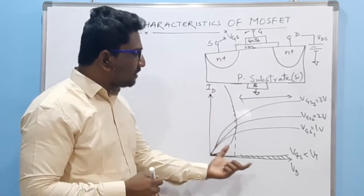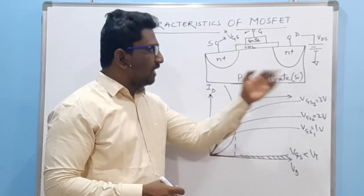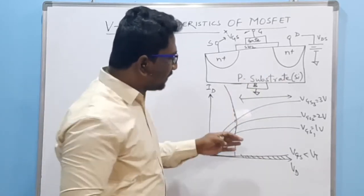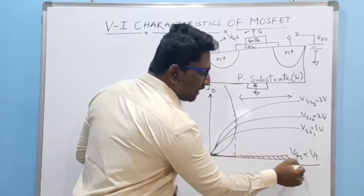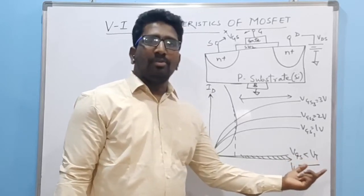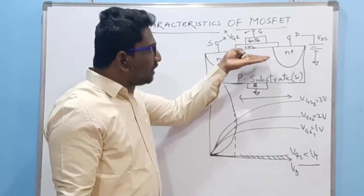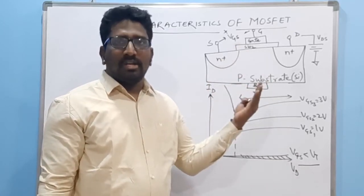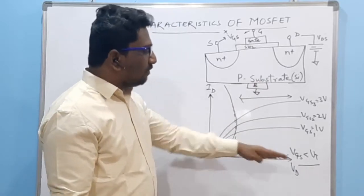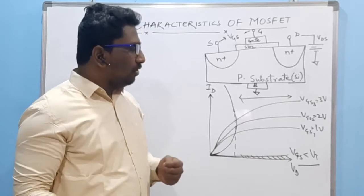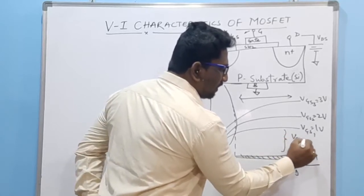Looking at the graph of drain current (ID) versus drain voltage (VDS), the cutoff condition — where current is essentially zero — occurs when VGS is less than the threshold voltage Vt. The threshold voltage Vt is the voltage at which an inversion layer forms below the SiO2 oxide layer, effectively turning the transistor on. Below Vt, the entire region is the cutoff region.